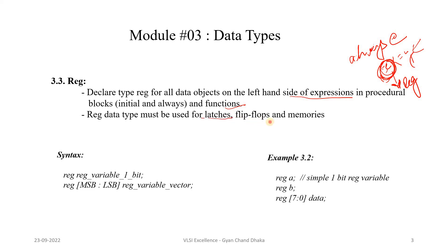Register data type must be used for latches, flip-flops, and memories. This is a very important point — for latches, flip-flops, and memories we definitely have to use a register type. However, a register data type can also be used for other combinational circuits, and that completely depends on the style of writing the procedural block, which we will study in later modules.